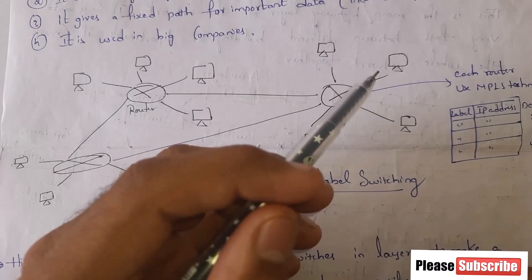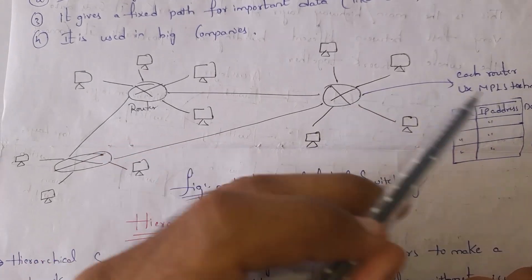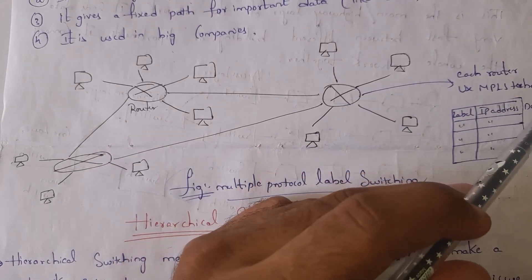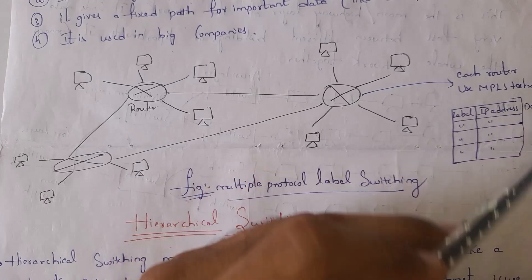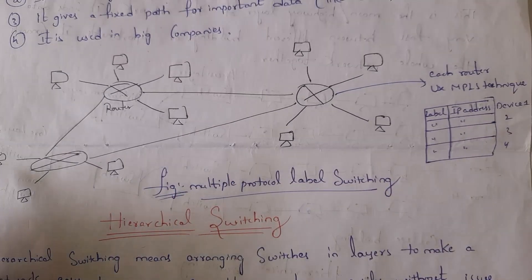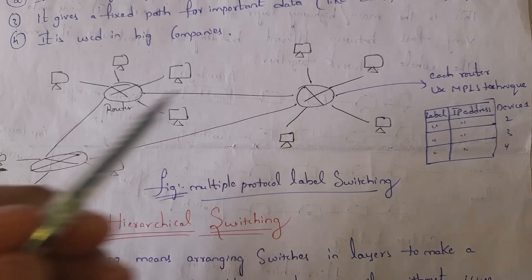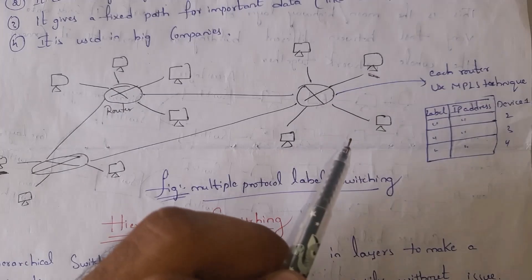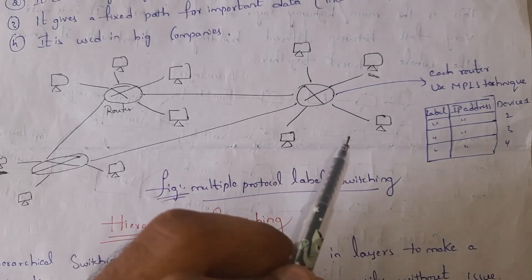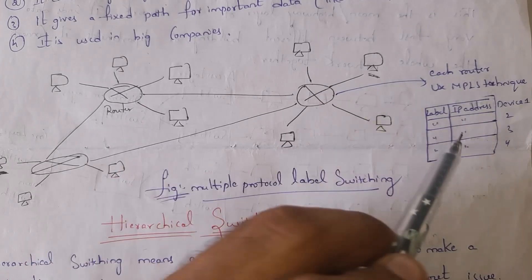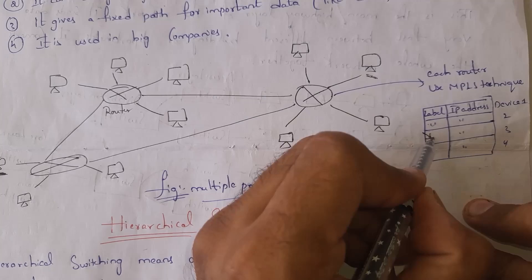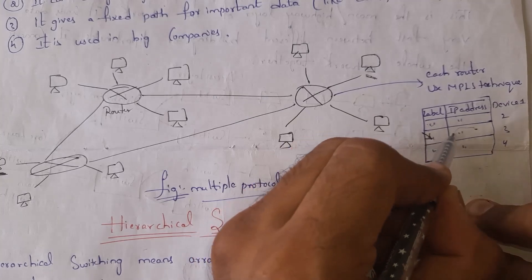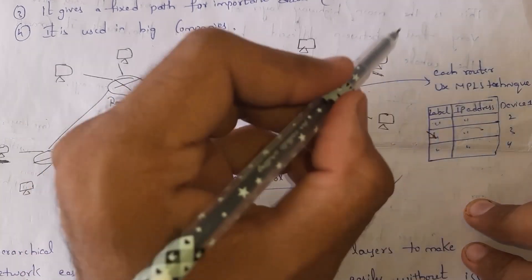This is the example. In MPLS technique each router will maintain a table. The table contains device name, label and IP address. For example, if this computer wants to transfer data to this computer, whenever data is transferred to this router, this router will not verify IP address. Instead this router will verify label - label is a shortcut. So by checking label, data is transferred to this IP address, and the receiver will receive data.